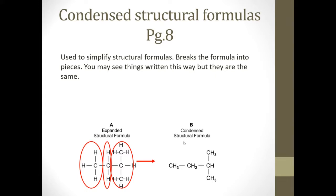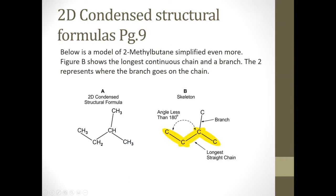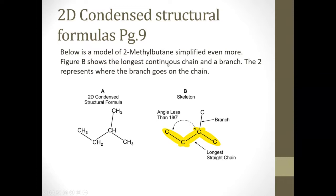Now we have a 2D condensed structural formula. This is a model of 2-methylbutane, and by the end of these two ILMs, you'll be able to look at a picture and give it a name like this, or if given a name, draw a simple diagram. When you're drawing them, they're going to be simple structural formulas in a straight line with branches. Figure B shows the longest continuous chain and the branch, and tells us a little about how we get this name.